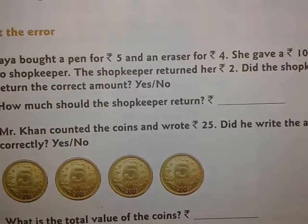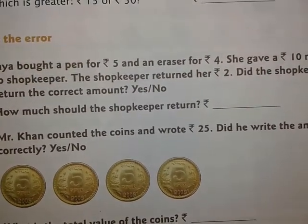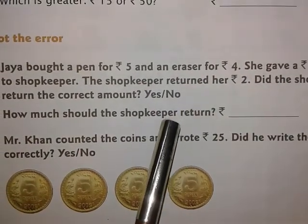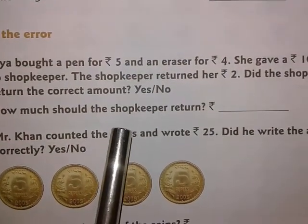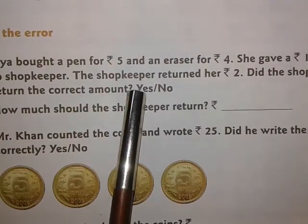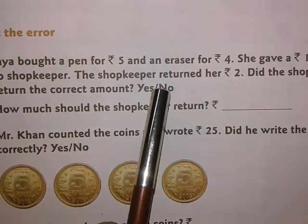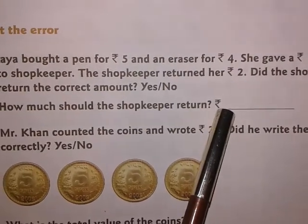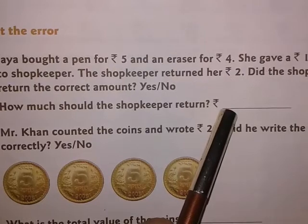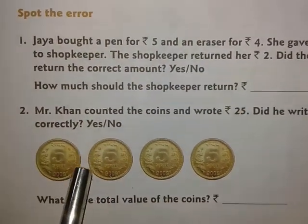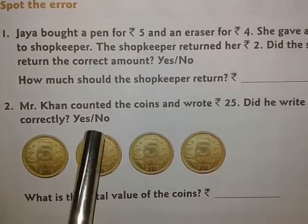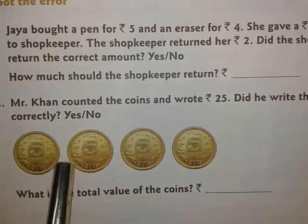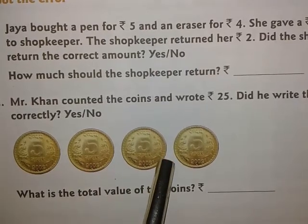You have to make a very simple and easy calculation and find out whether the shopkeeper has returned the correct amount or not. If yes, tick on yes; if no, tick on no. And if you think it is not correct, you will write the correct amount the shopkeeper should have returned in the blank. Number 2 is Mr. Khan counted the coins and wrote it as Rs.25 — you can see here 4 Rs.5 coins given.